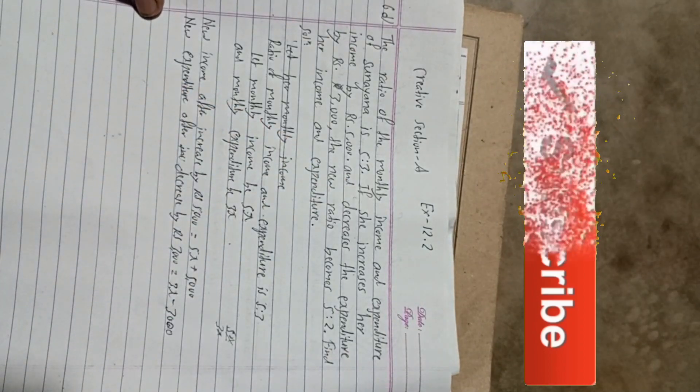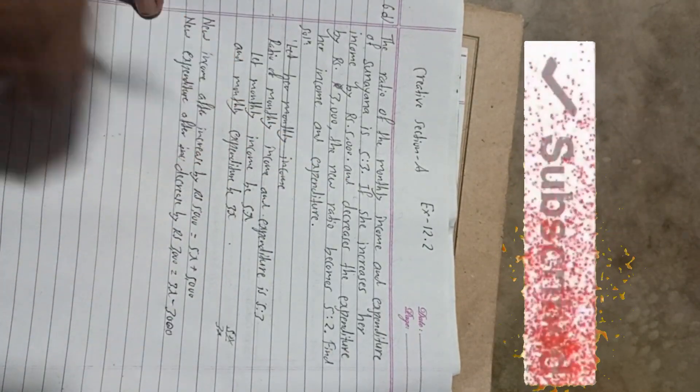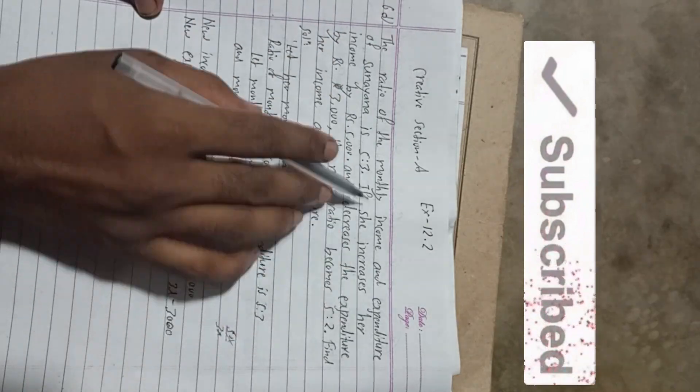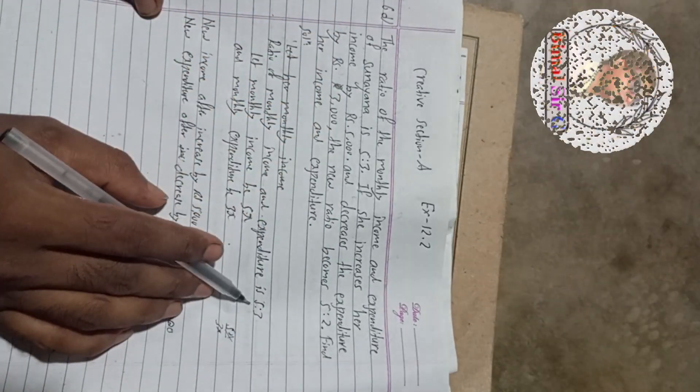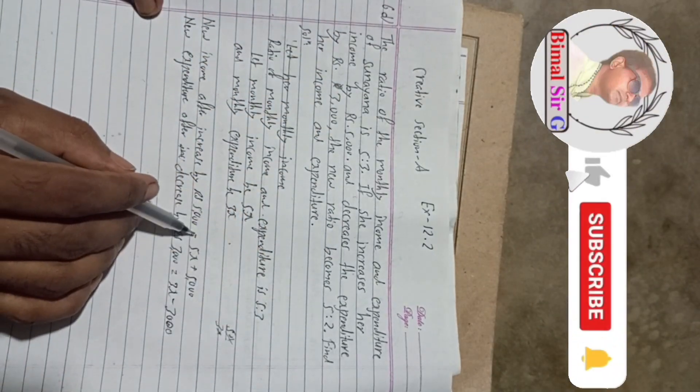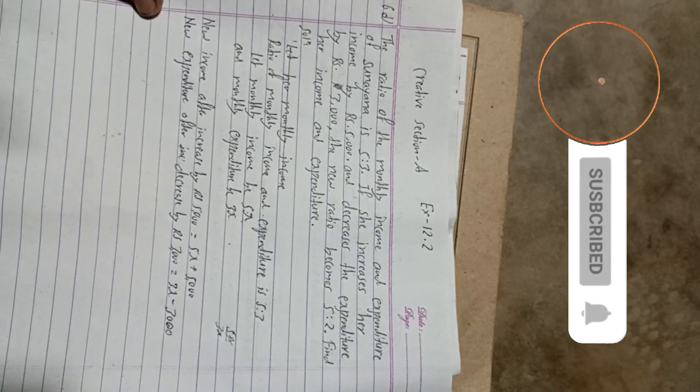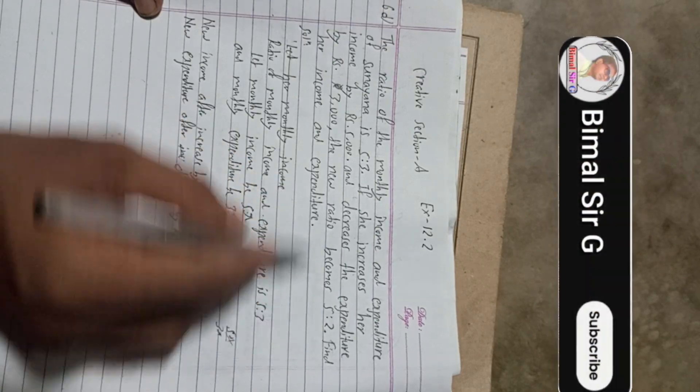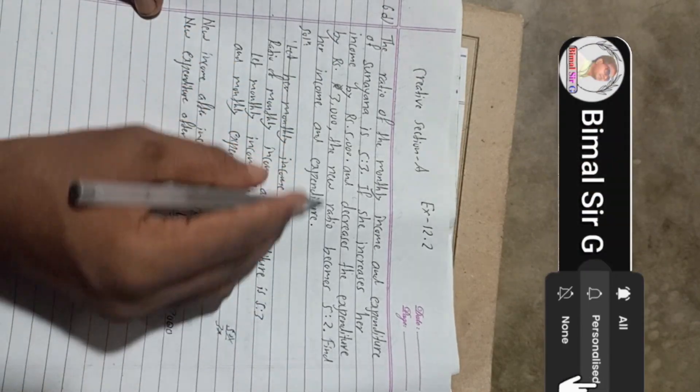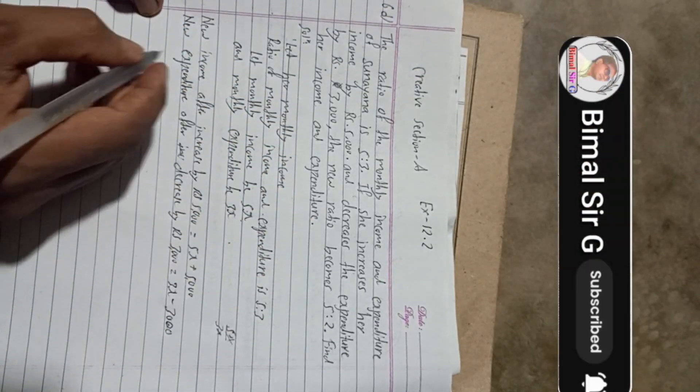Now, given the, the question says, the ratio of the monthly income is 5 is to 3, and then we got this both. Now, from here, given the new ratio is here, given ratio is how much here, the new ratio. Given there, the new ratio becomes 5 is to 2.